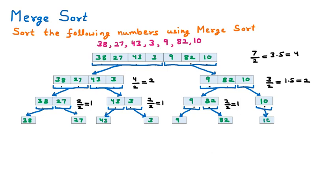Now we have broken the complete list into individual single elements. The first part of merge sort — divide and conquer — is complete, where we divided the bigger problem into small single-element problems. Now we are going to merge them, and while merging we must ensure the elements come into ascending order.